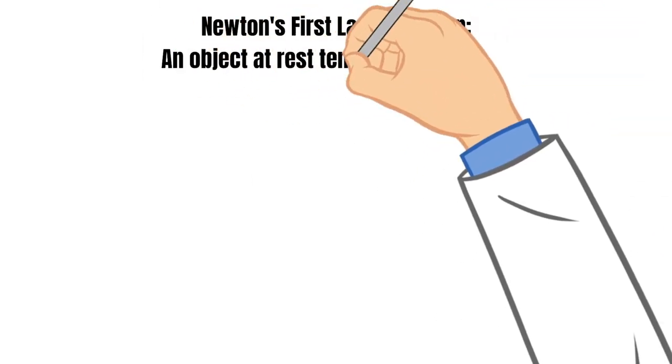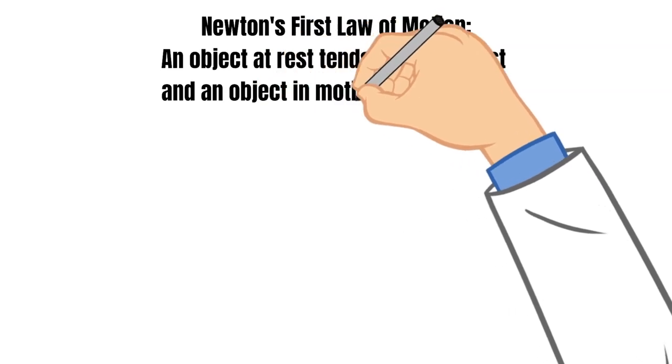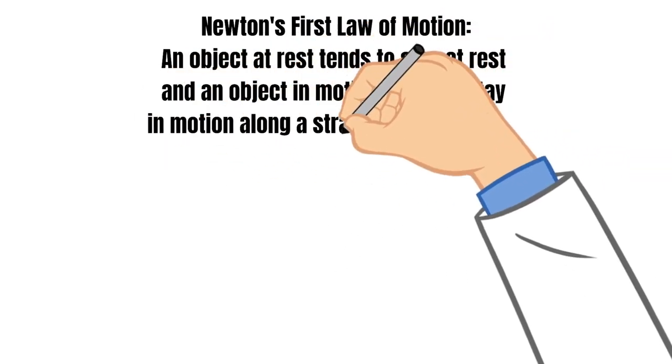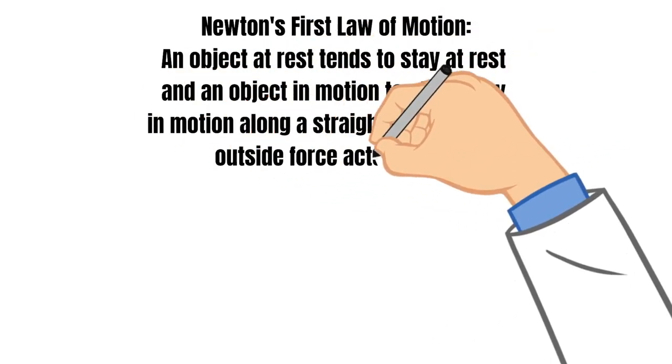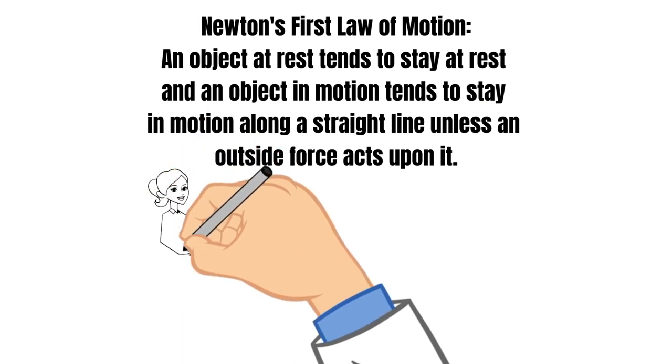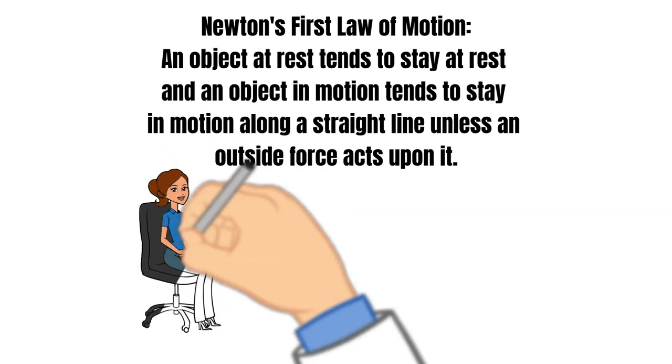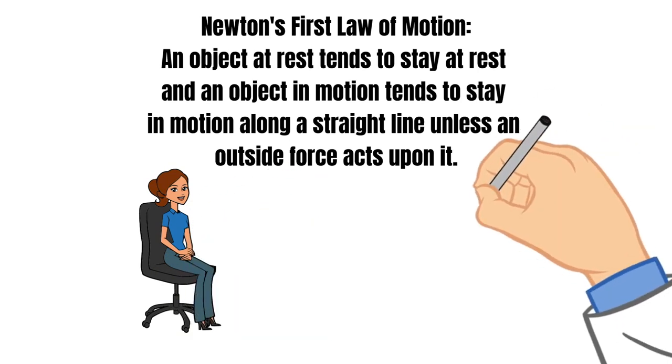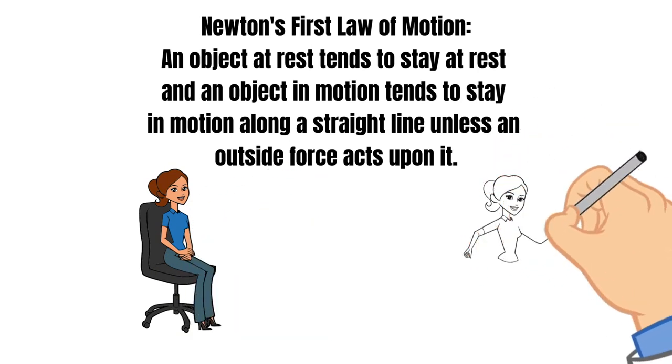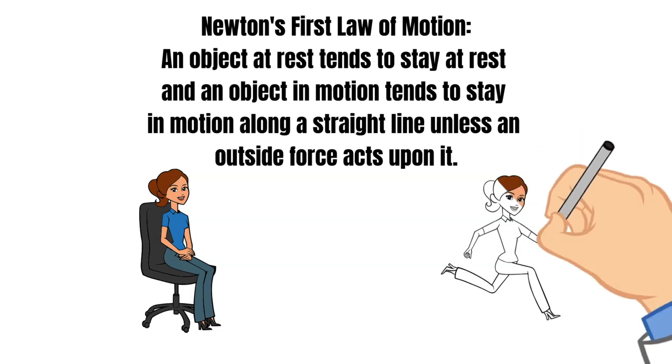Newton's first law of motion states that an object at rest tends to stay at rest and an object in motion tends to stay in motion along a straight line unless an outside force acts upon it.